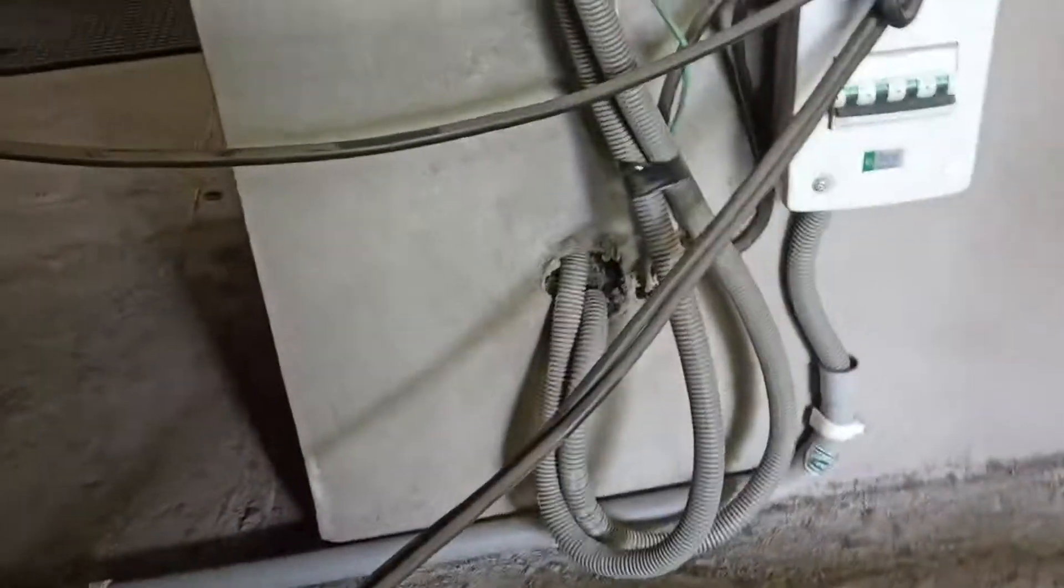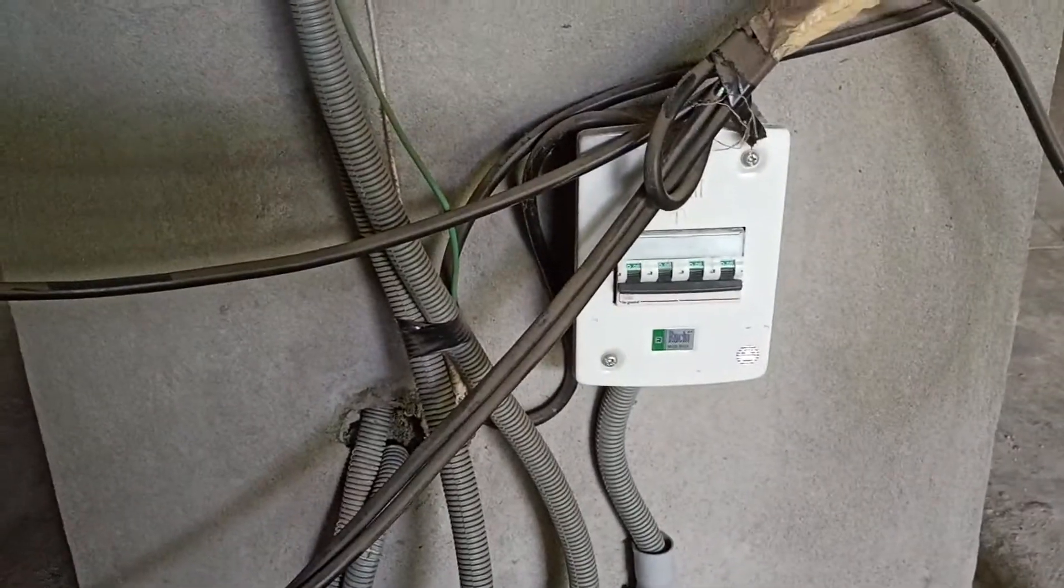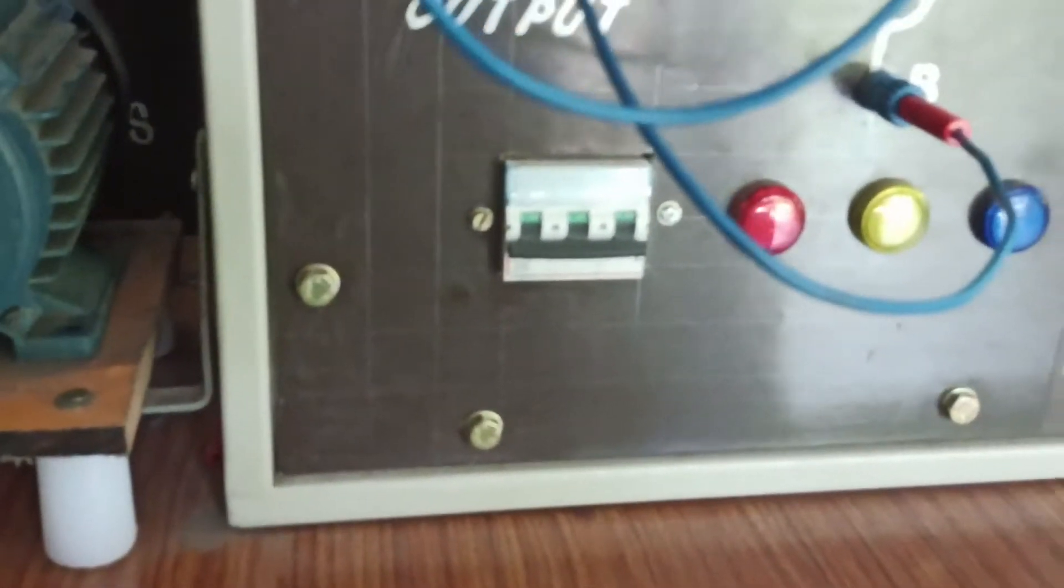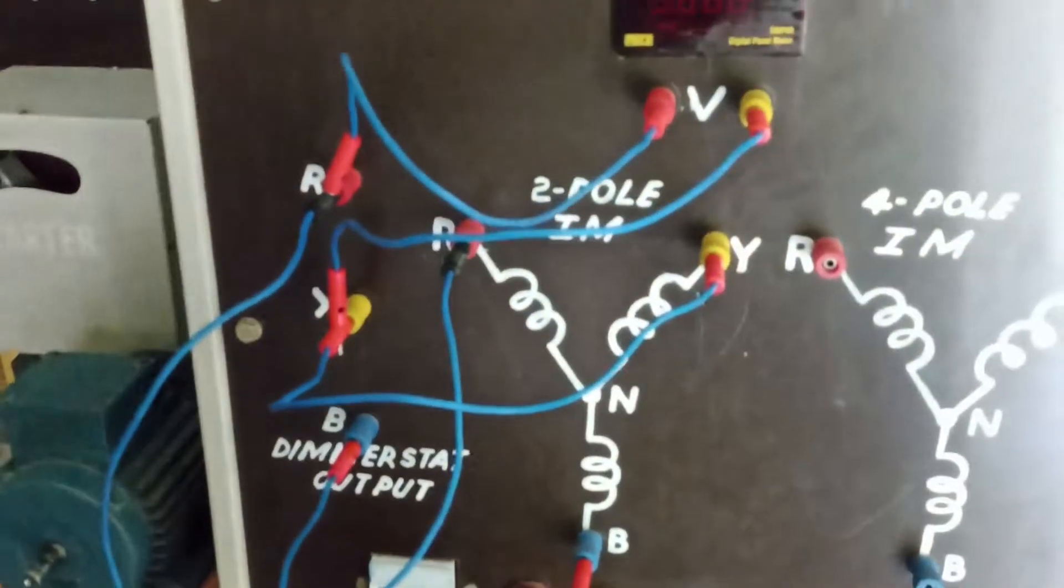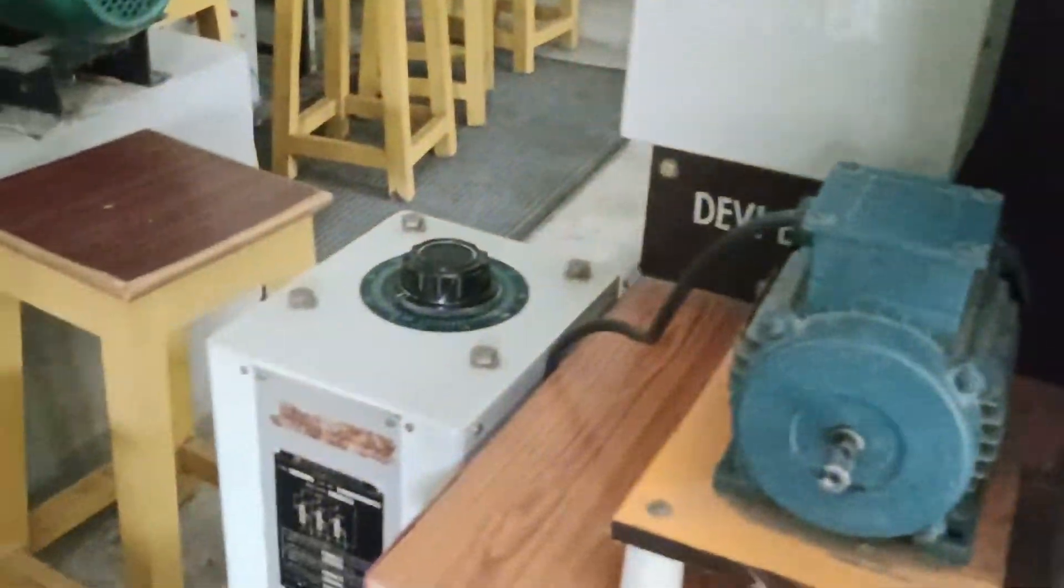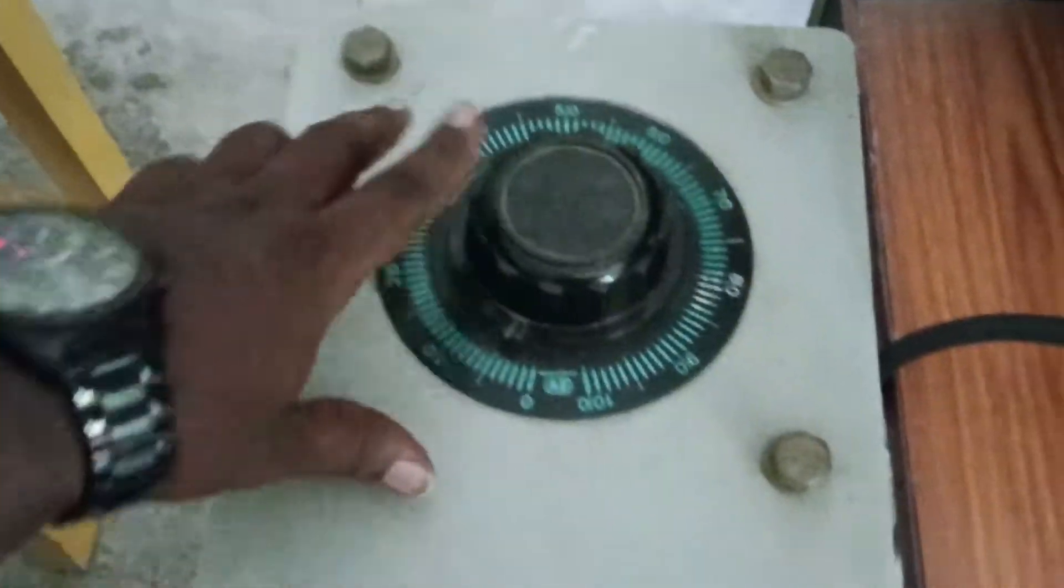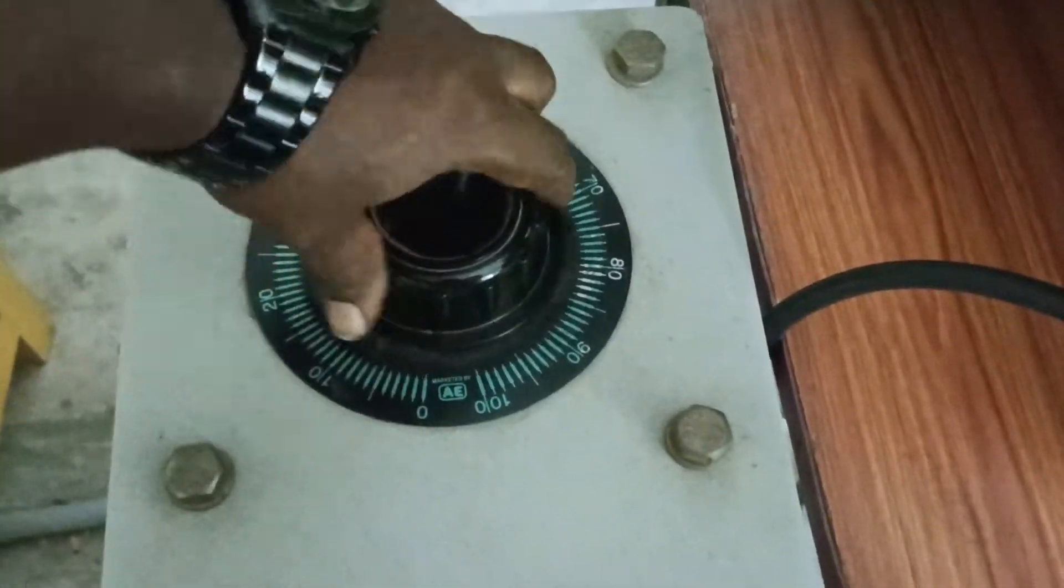The switch to turn this on is provided here. You can see the switch. When you turn it on, it will supply power to this panel. You need to set this autotransformer to 415 volts.